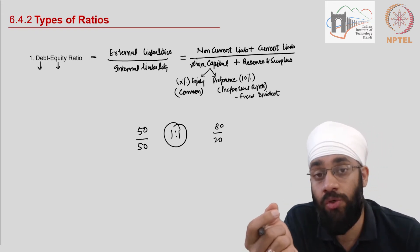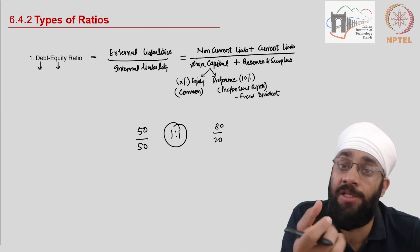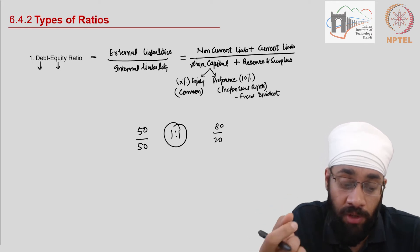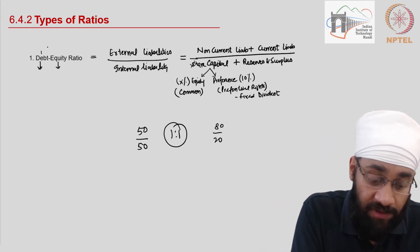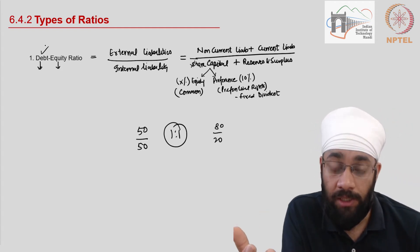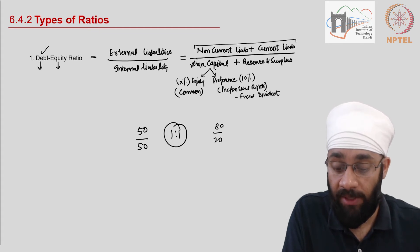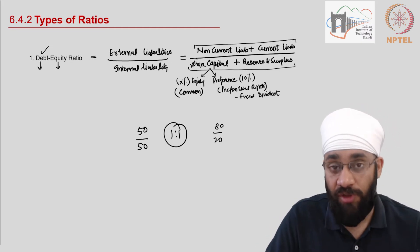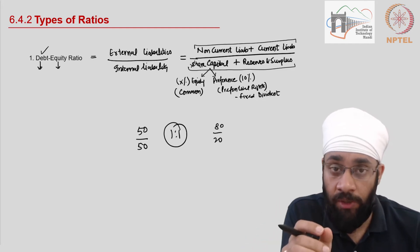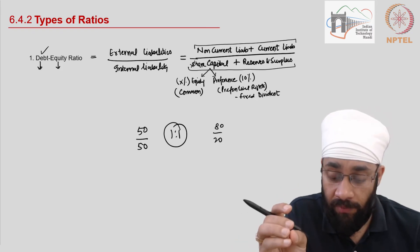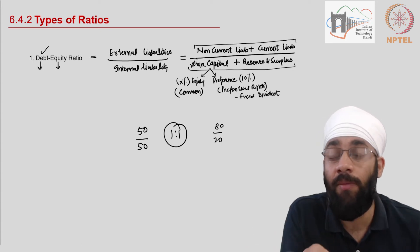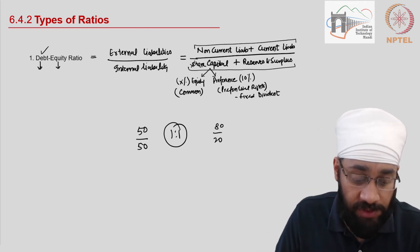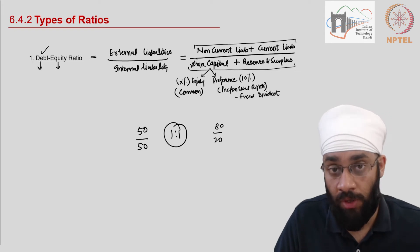The debt-to-equity ratio is a very important ratio, used not only by management internally but also by external parties when the company is trying to raise more debt funding. Debt essentially refers to loans taken by the company, and this ratio — external liabilities divided by internal liabilities — shows the balance between the two. For an ideal ratio, refer to the industry average; numbers are available on various platforms for the sector you are working in.